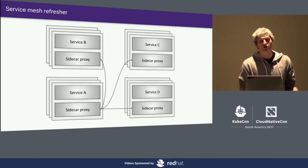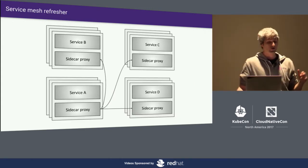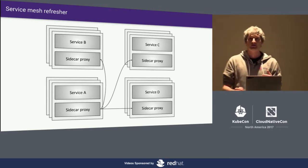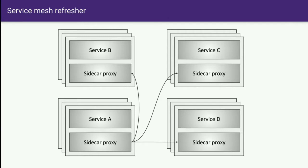From a service mesh perspective, this is a simple diagram of what the service mesh does. We have a couple of different services, and a sidecar proxy co-located next to every service. The service sends all of its requests or traffic to its local proxy. That proxy does all of the things around service discovery, load balancing, rate limiting, observability — it picks a target, sends the request to the other side, and the response comes back.